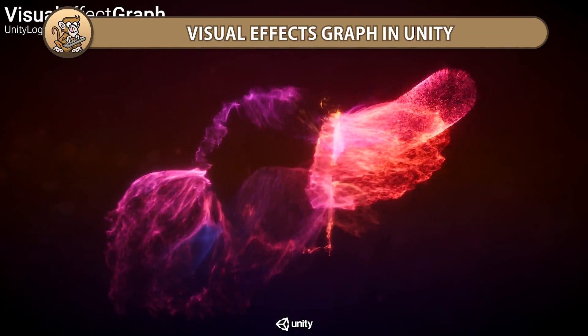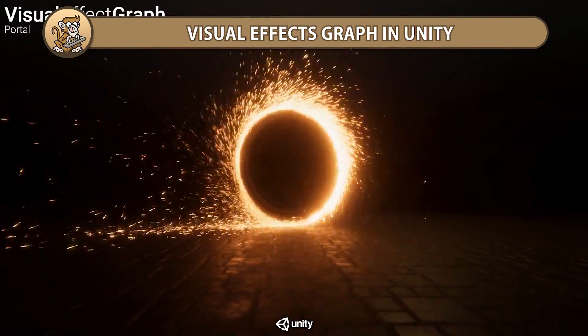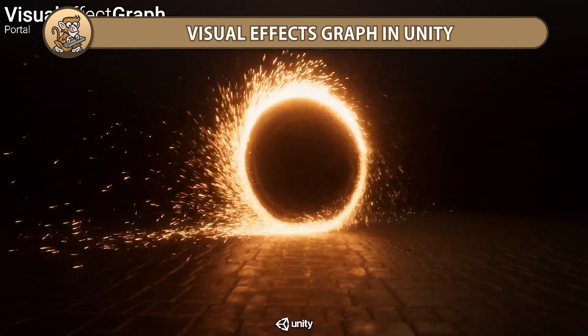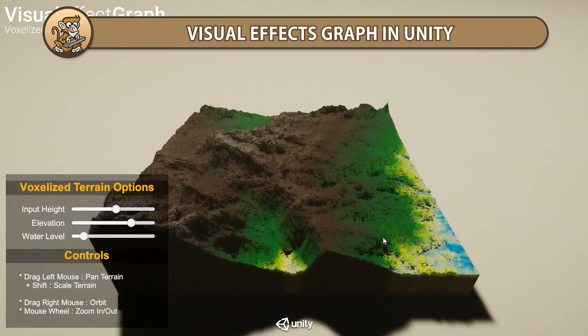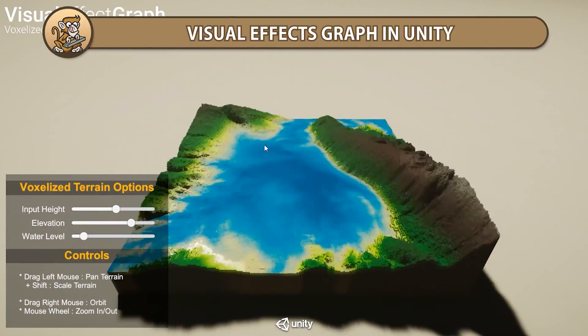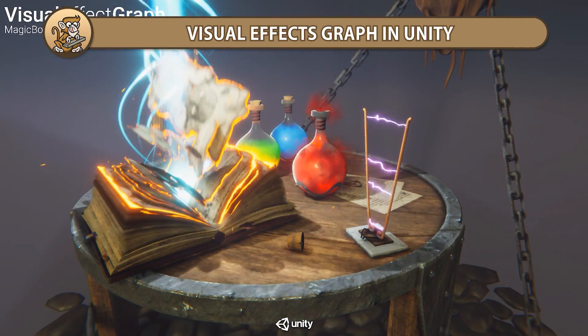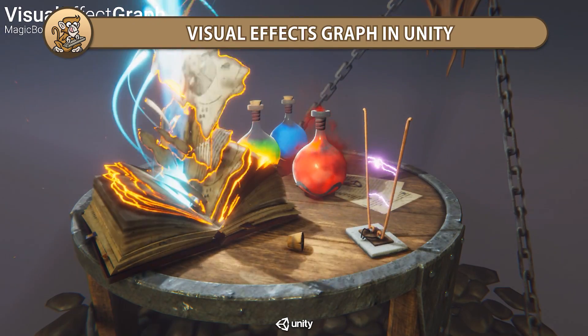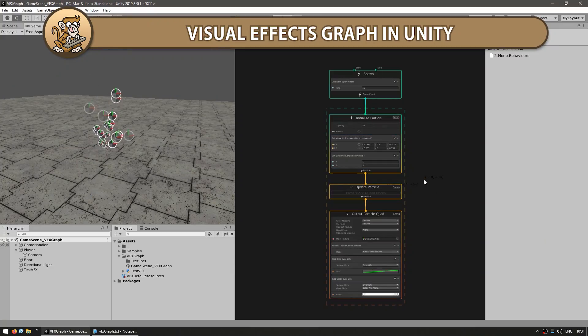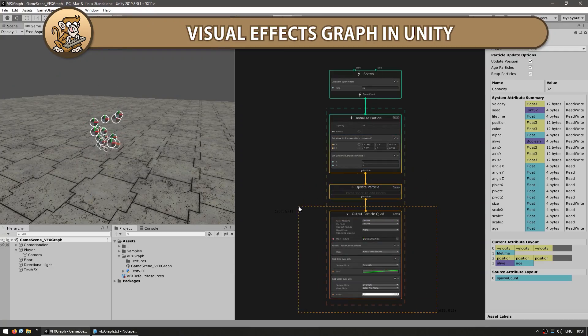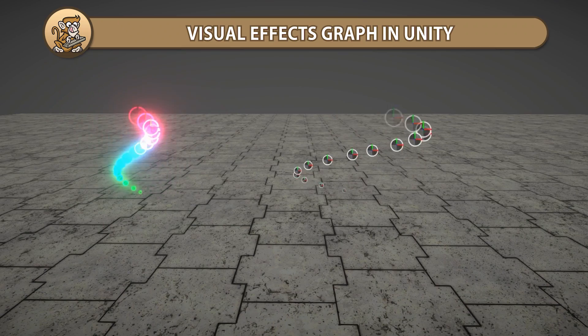In this video, we're going to get started using Unity's Visual Effects Graph. This is a new particle system that is super fast, which allows you to have an insane amount of particles. It's also node-based, so it's very easy to create some awesome effects.